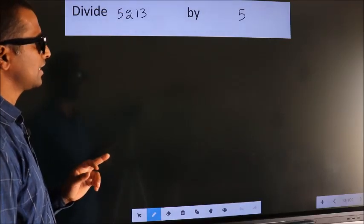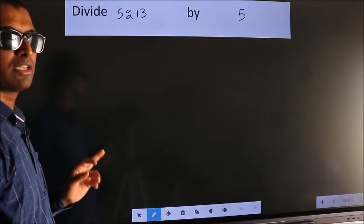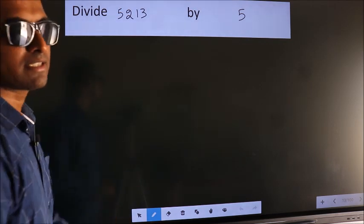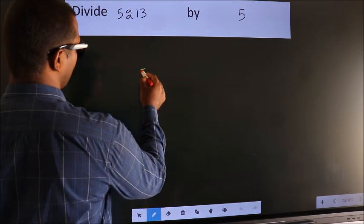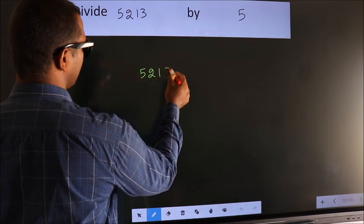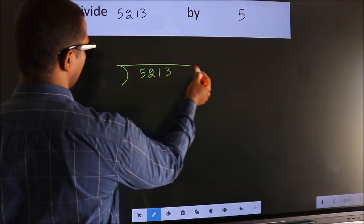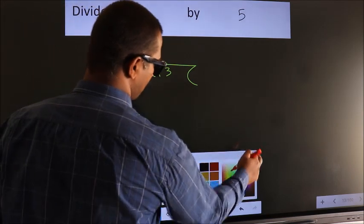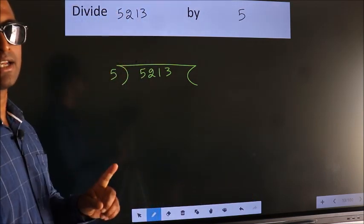Divide 5213 by 5. To do this division, we should frame it in this way. 5213 here, 5 here. This is step 1.